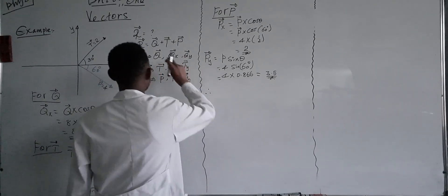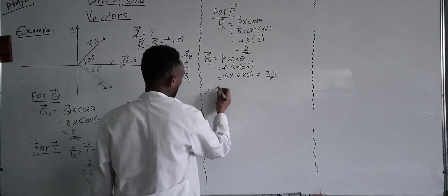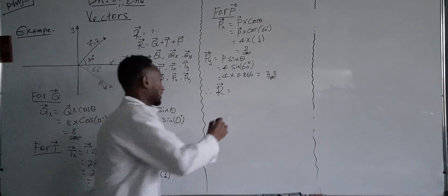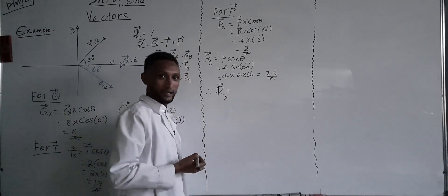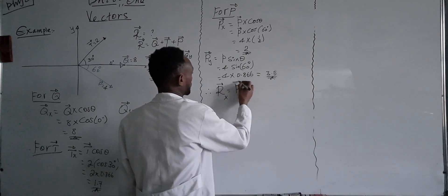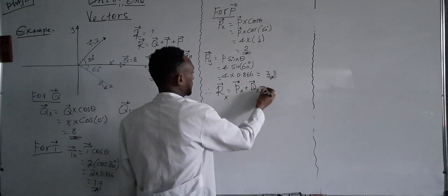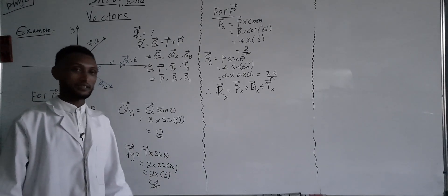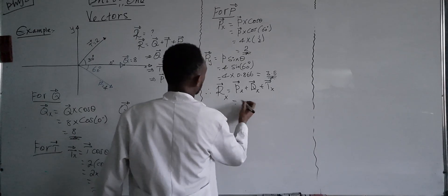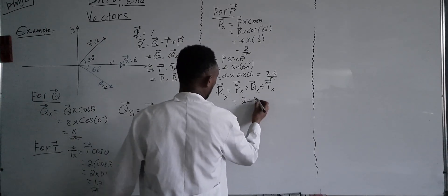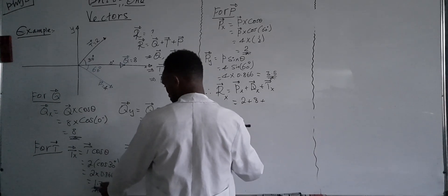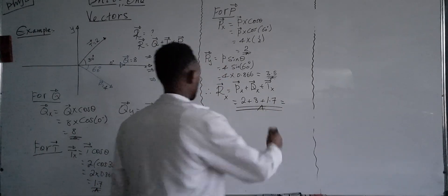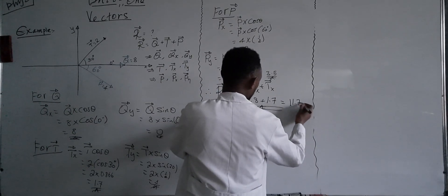Therefore, the resultant vector R also has two components. The resultant horizontal component Rx equals Px plus Qx plus Tx. Px is 2, plus Qx is 8, plus Tx is 1.7. Summing them, the resultant horizontal component of the three vectors equals 11.7.